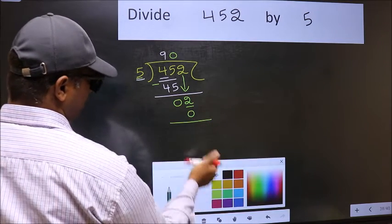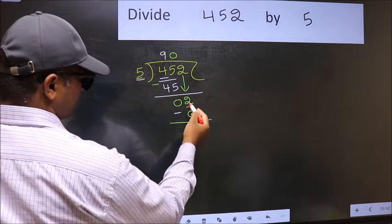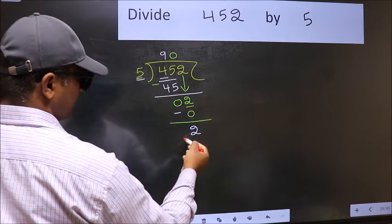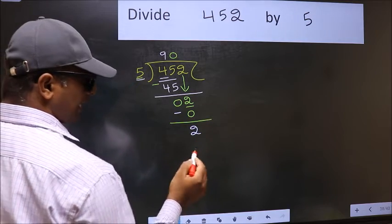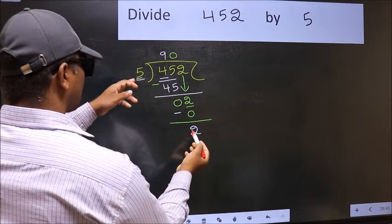Now you should subtract. 2 minus 0, 2. Over here, we did not bring any number down. And 2 is smaller than 5.